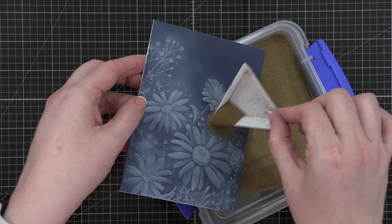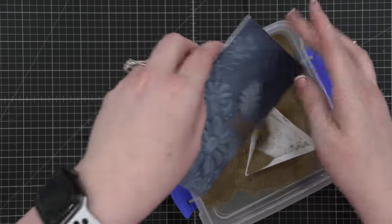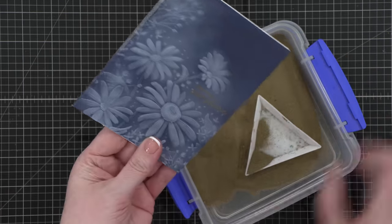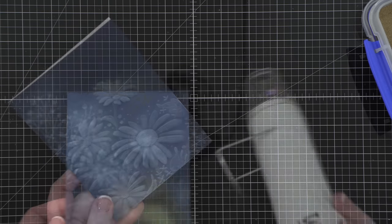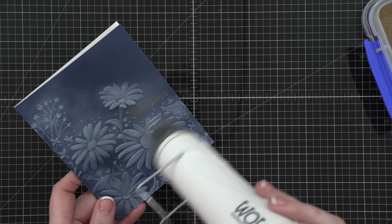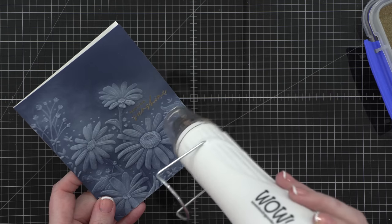I'm going to be using some gold embossing powder. This is gilded embossing powder from Brutus Monroe. I'll sprinkle that on and tap off the excess. And then I'll hit this with my heat tool, and I'm just going to heat this until I see the color change and the powder has melted.